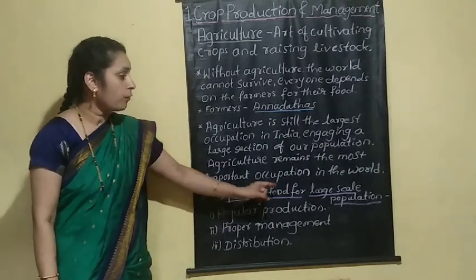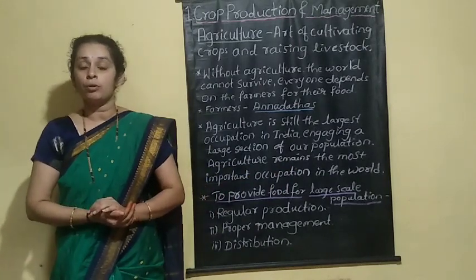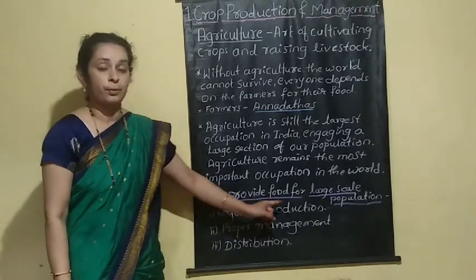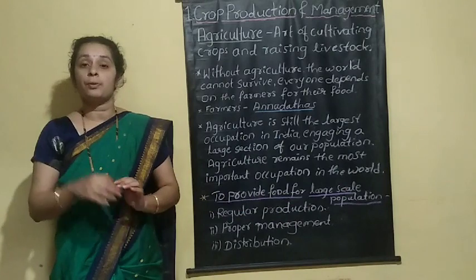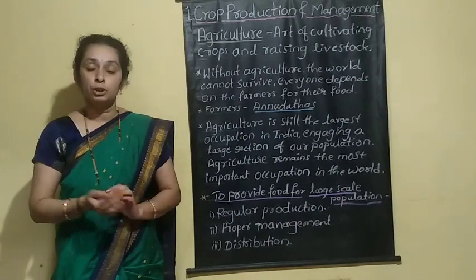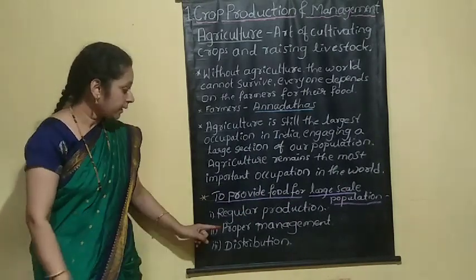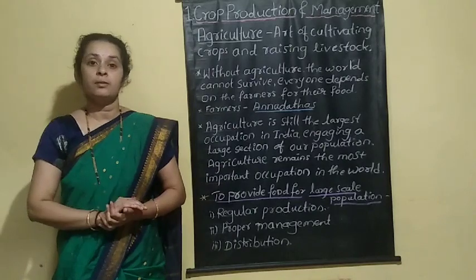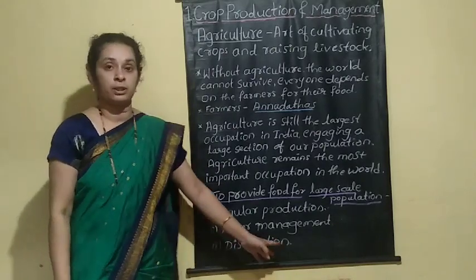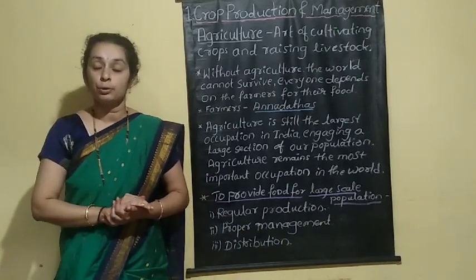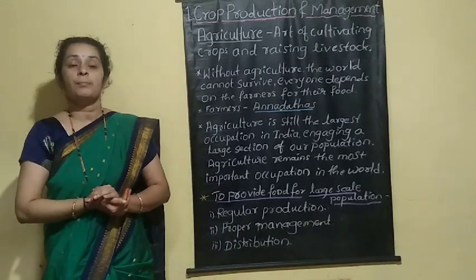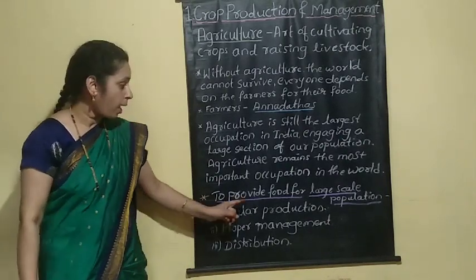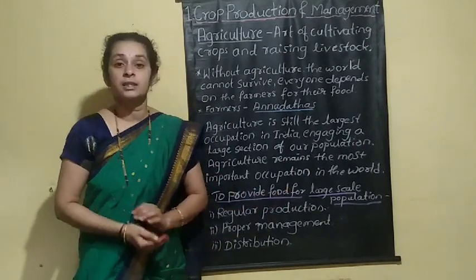To provide food for a large-scale population, we should follow some steps. First is regular production — food should be produced regularly. Second is proper management of produced food. Third is distribution — the produced and managed food should be distributed properly. These are the three steps to be followed to provide food for a large-scale population.